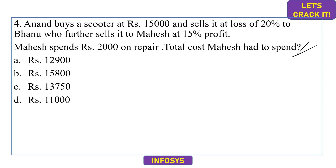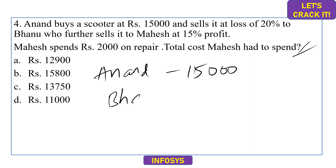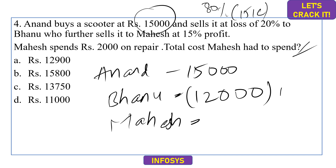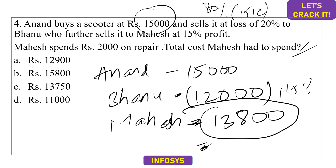The fourth question is profit and loss. Anand buys a scooter for ₹15,000 and sells it at a 20% loss to Banu. Banu's cost = 80% of ₹15,000 = ₹12,000. Banu sells to Mahes at 15% profit, so Mahes pays 115% of ₹12,000 = ₹13,800. Mahes additionally spends ₹2,000, making his total cost ₹15,800. Option B is the correct answer.